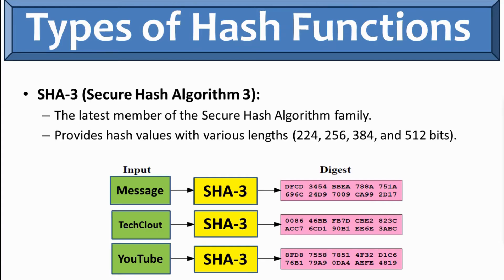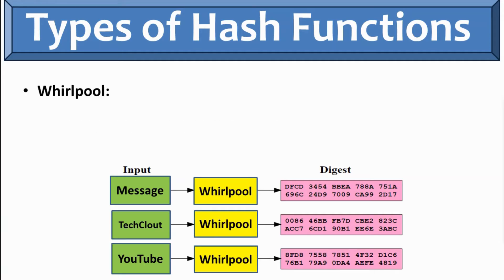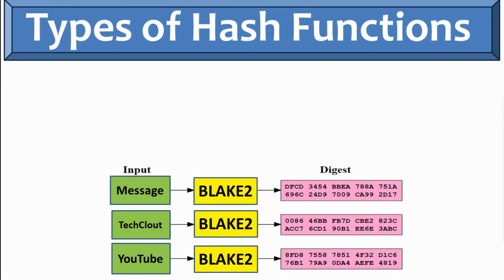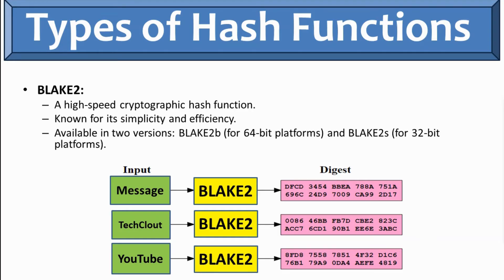Then we have Whirlpool. It is a cryptographic hash function also that produces a 512-bit of hash value and used for various security applications mostly. Later we have BLAKE2. It is a high-speed cryptographic hash function known for its simplicity and efficiency. It is available in two versions which is BLAKE2B and BLAKE2S. BLAKE2B is 64-bit platform and BLAKE2S is the 32-bit platform.